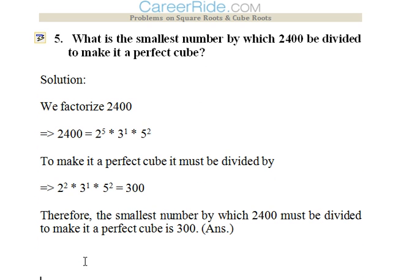Fifth question: what is the smallest number by which 2400 be divided to make it a perfect cube? Now we factorize 2400, so 2400 gives 2 to the power 5 into 3 to the power 1 into 5 to the power 2. So to make it a perfect cube, it must be divided by 2 to the power 2 into 3 to the power 1 into 5 to the power 2, which would leave 2 to the power 3 that is 8 which is a perfect cube. So 300 should be the one by which it should be divided to get a perfect cube.